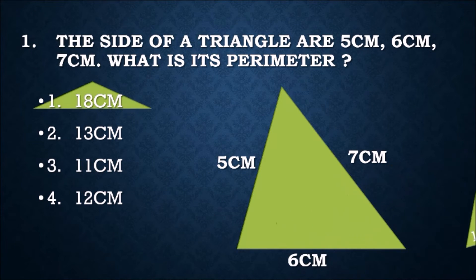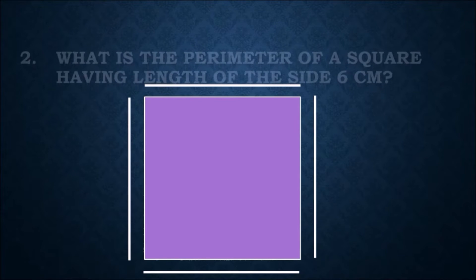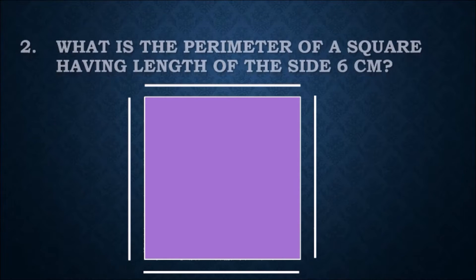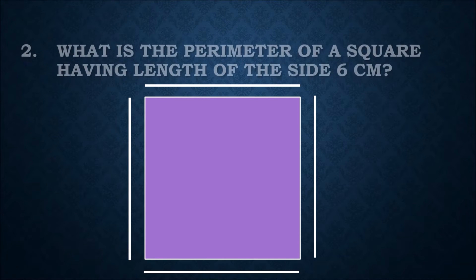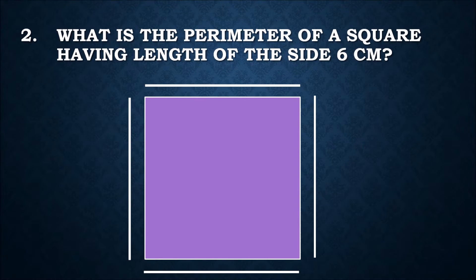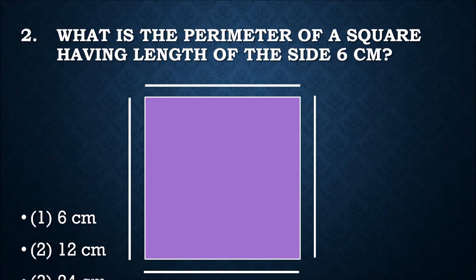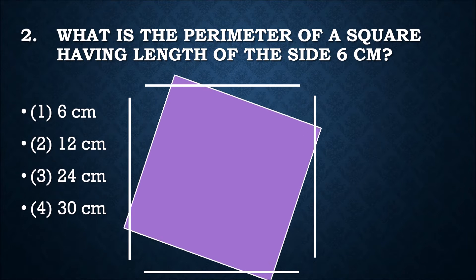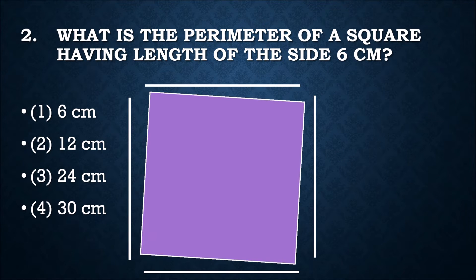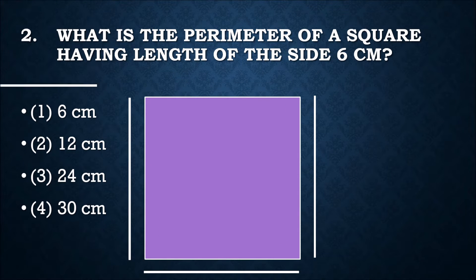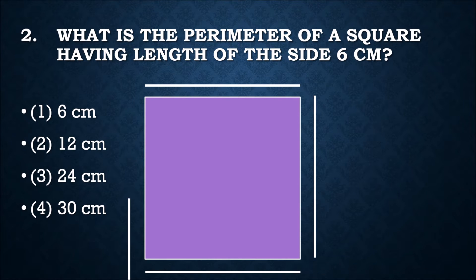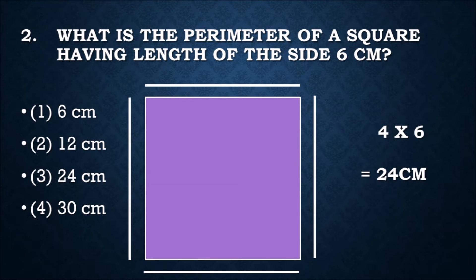Question number two: what is the perimeter of a square having length of the side 6 centimeter? Options: 6 centimeter, 12 centimeter, 24 centimeter, or 30 centimeter. Perimeter of the square is 4 times the side. All four sides are equal, and the side is given as 6 centimeter. 4 times 6 is equal to 24 centimeter. Third option, 24 centimeter, is the correct answer.